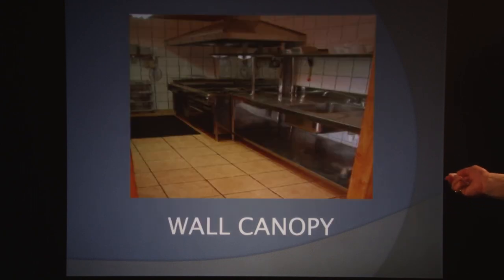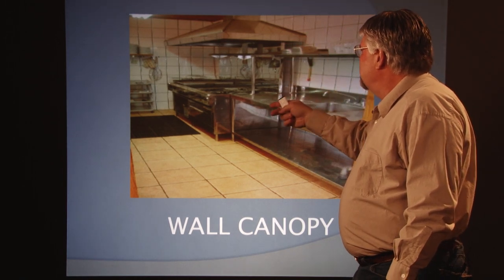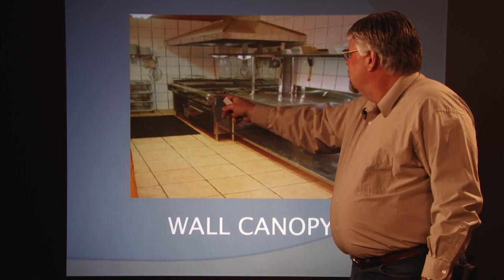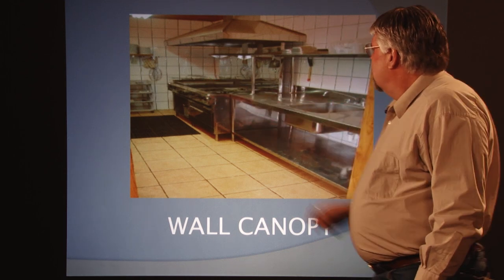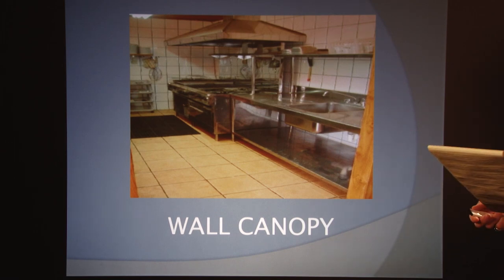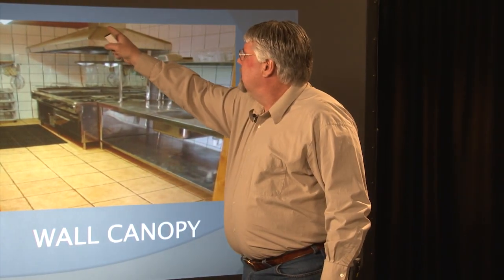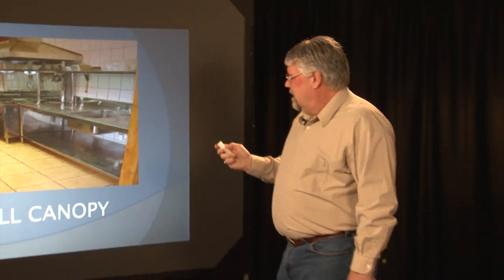Then we've got the wall canopy. As you can see, it's mounted to the wall — hence the name wall canopy — and it's large enough to service this whole grill. We've got a grill here and a cooktop on this side. The wall-mounted exhaust hood is mounted against a wall and above a single appliance or a line of appliances. You can see the large duct — about a two-foot by two-foot duct — taking everything off the whole assembly up and out in the exhaust.